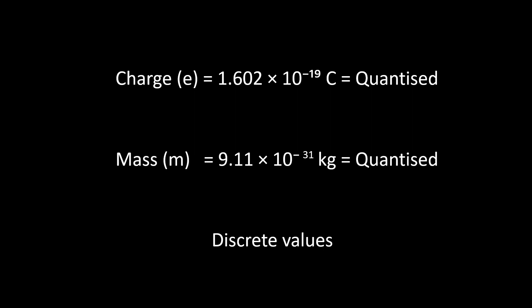So in our previous video, we discussed how the charge and mass of an electron can be experimentally approximated as discrete values. The charge of an electron, for example, was determined to be 1.602 times 10 to the negative 19 coulombs, while the mass of an electron was determined to be 9.11 times 10 to the negative 31 kilograms.